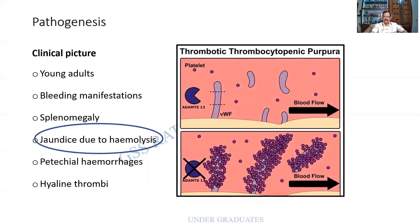Going on to the pathogenesis: there are platelets and the von Willebrand factor, along with an enzyme called ADAMS-13. In TTP, there is a defect or dysfunction in ADAMS-13. As a result, there is aggregation of platelets around the von Willebrand factor, leading to extensive intravascular thrombosis. At the same time, bleeding manifestations can occur elsewhere.